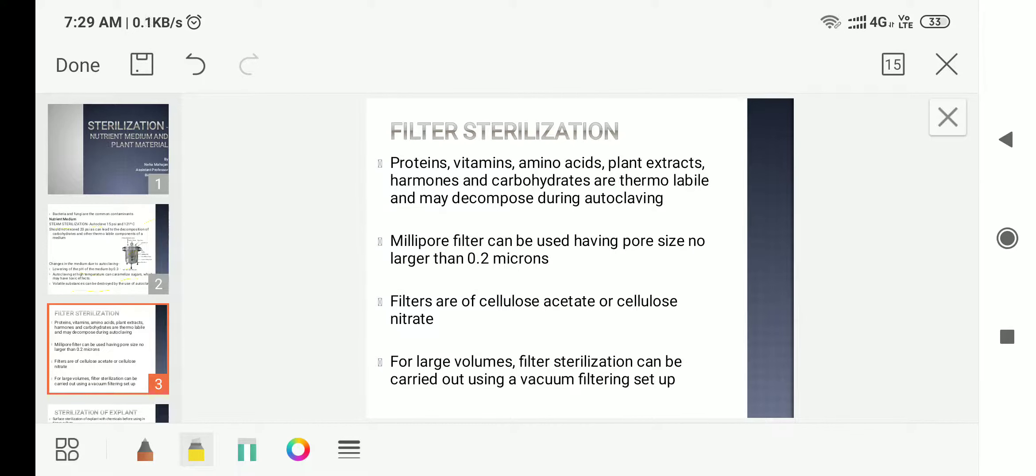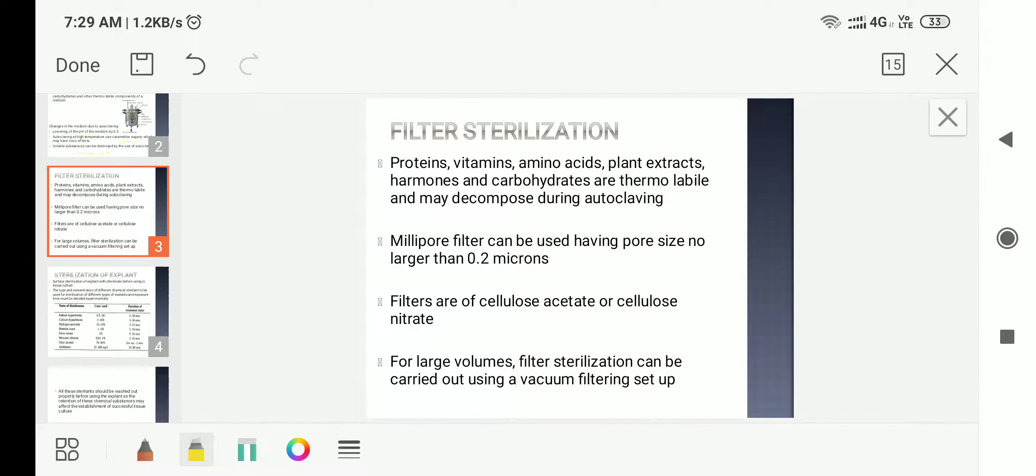Now for filter sterilization, all those components which are sensitive to heat—that we can't sterilize in the autoclave—can be sterilized with filter sterilization. In this, the millipore filter is used having pore size not larger than 0.2 microns. It has been seen that these filters remove even viruses, bacteria, and contaminants. These filters are made up of cellulose acetate or cellulose nitrate.